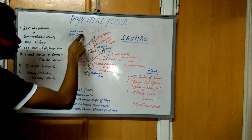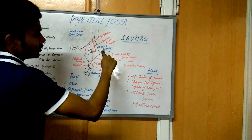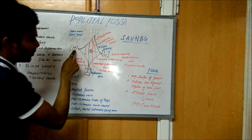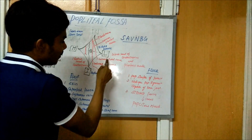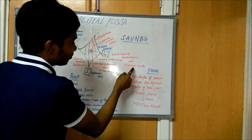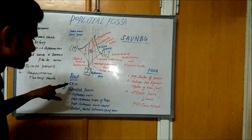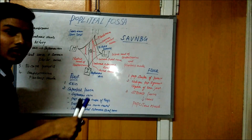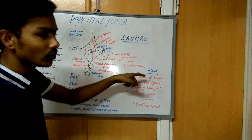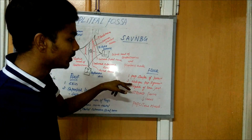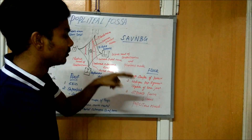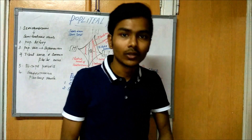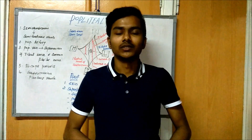Once again, the overall summary: the two muscles on the superior medial side are semi-membranous and semi-tendinous; on the superior lateral side we have biceps femoris; on the inferior medial side we have the medial gastrocnemius; and on the inferior lateral side we have the lateral gastrocnemius and plantaris muscle. The roof has skin and superficial fascia containing the saphenous vein and cutaneous nerves of the thigh. The floor has the popliteal surface of the femur, the oblique popliteal ligament, the capsule of the knee joint, and the deep fascia covering the popliteal muscle. Thanks for watching.